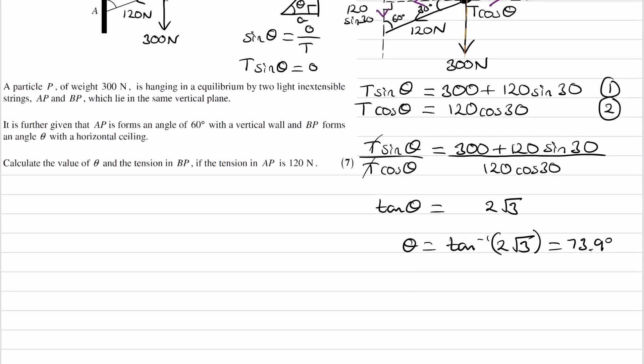We can then work out T. We can put it back into one of the equations. I'll pick equation 2. So T cos, the angle that we just worked out, 73.89 etc, is equal to 120 cos 30.